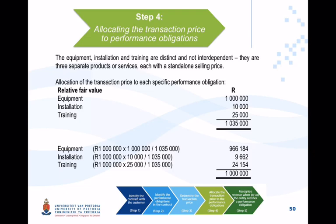The transaction price for this specific contract is 1 million Rand, covering these three separate performance obligations. You then take the transaction price and allocate it to each performance obligation on a relative selling price basis. For example, training has a 25,000 Rand standalone selling price, and you allocate the transaction price proportionally to this component.